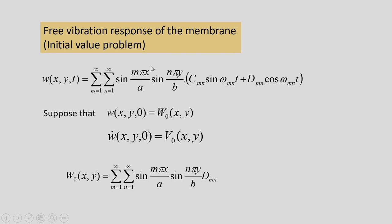Now let us see the free vibration response of the membrane — the initial value problem. Given only initial conditions, using mode superposition the transverse displacement is: w(x,y,t) = ΣΣ sin(mπx/a)·sin(nπy/b)·[Cₘₙ·sin(ωₘₙt) + Dₘₙ·cos(ωₘₙt)], where ωₘₙ is the natural frequency for mode (m,n) and Cₘₙ, Dₘₙ are constants of integration.